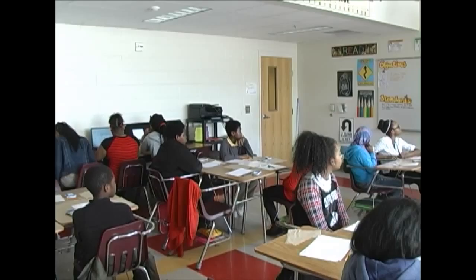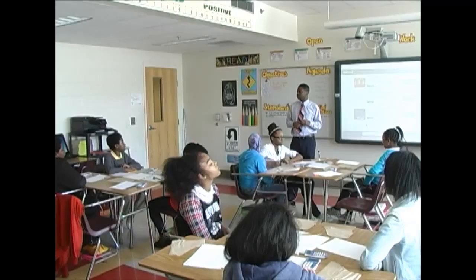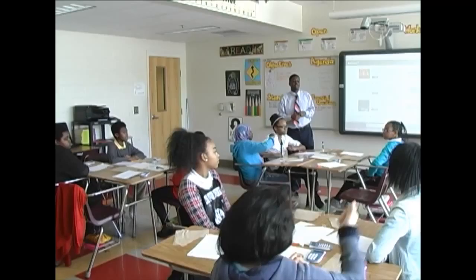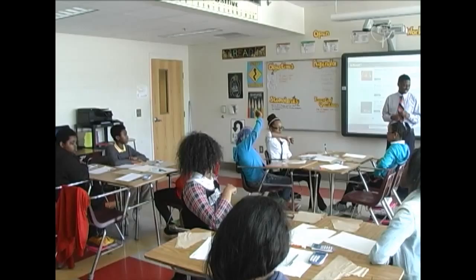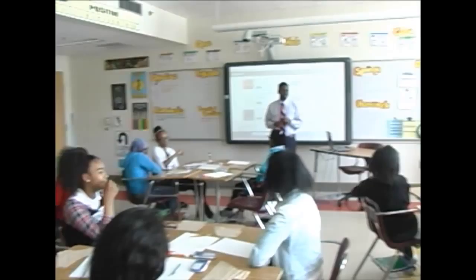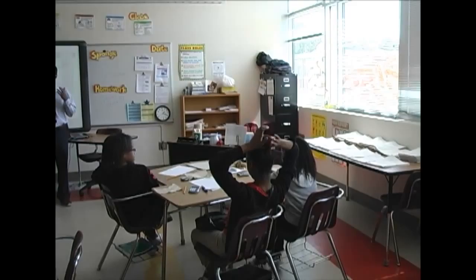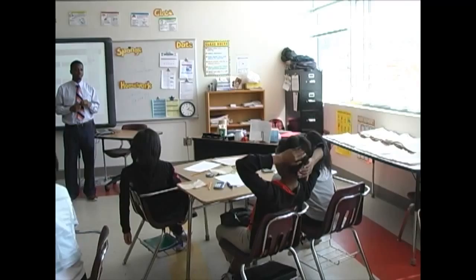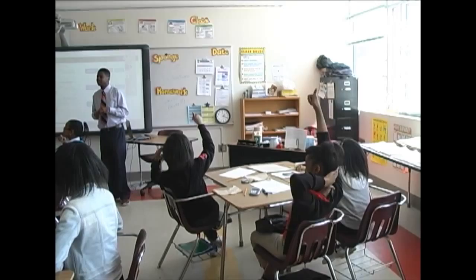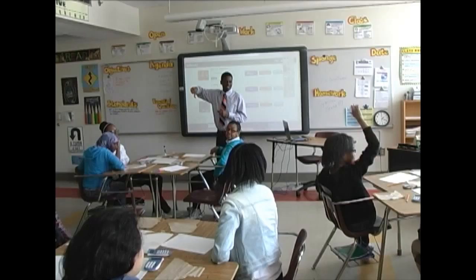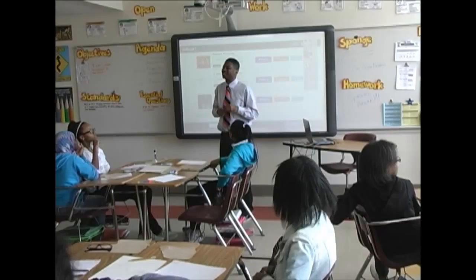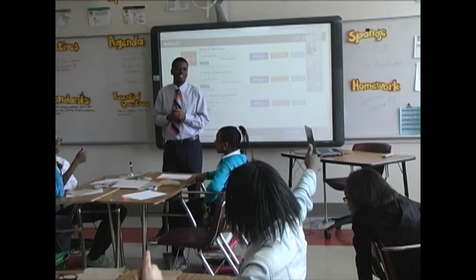We went over the median and the mean. So tell me something you know about the range. The range is basically the smallest number divided by the largest number. Thumbs up if you say that's correct, thumbs down if it's incorrect. I'm seeing some thumbs down. She said you subtract the smallest number from the largest number. Thumbs up if she's correct. Now I'm going to say that is correct.